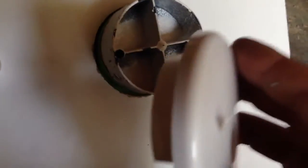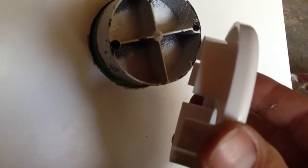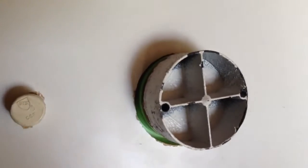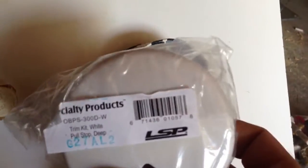There are two types of escutcheons or trim kits available. We have the shallow or regular trim, and then we also have your deeper trim kit if you do have double drywall or backs on cabinets. They come individually bagged with the handles included.